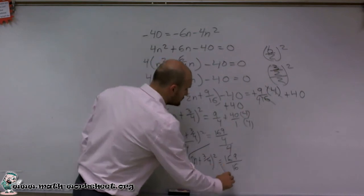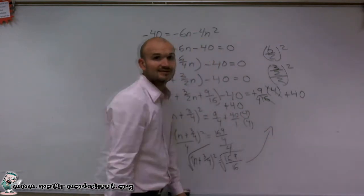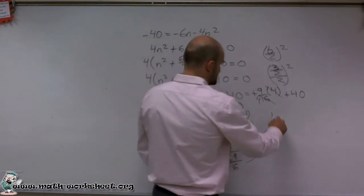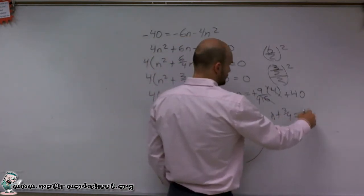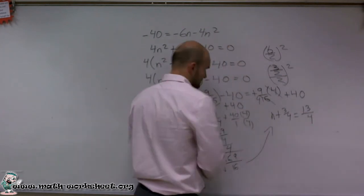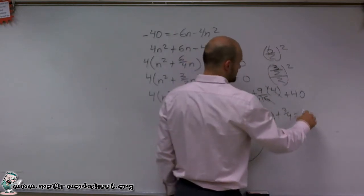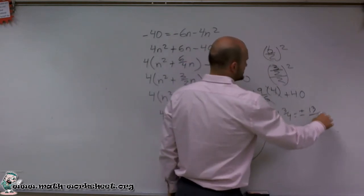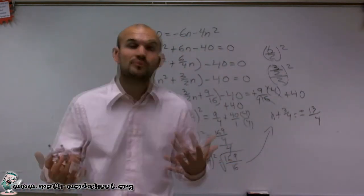Now, I root the top to bottom. And I'm going to have to move this over here. So I have n plus 3 fourths equals plus or minus 13 over 4. Remember, whenever we introduce the square root, you got to make sure you take your plus and your minus.